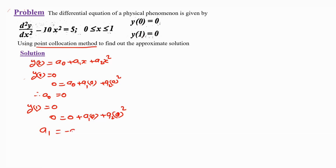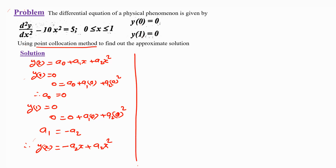From y(1) = 0, we get a₁ = −a₂. Therefore y(x) = 0 + (−a₂)x + a₂x², which simplifies to y(x) = a₂(x² − x). This is the trial function for the given differential equation after applying the boundary conditions.